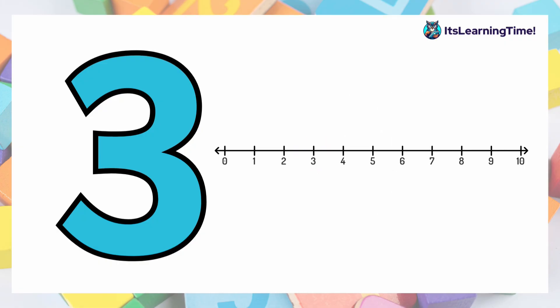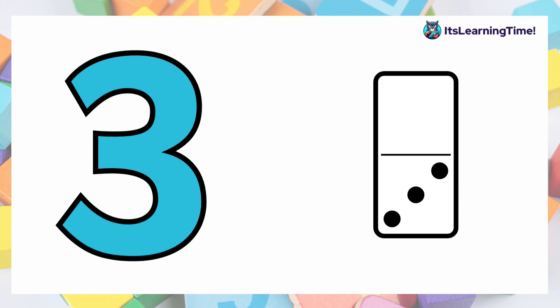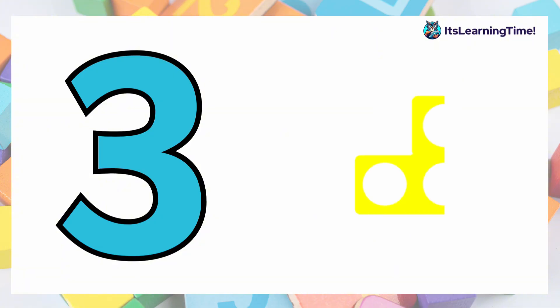Three on a number line. We have three on a domino and number three on a numicorn.